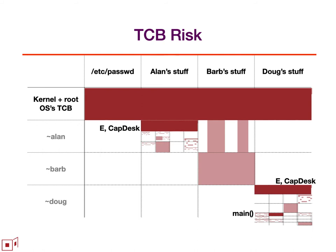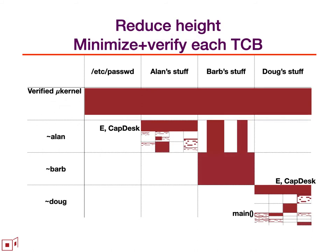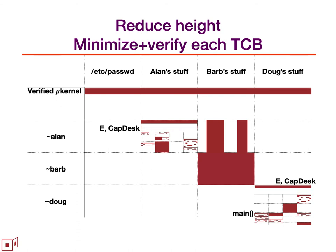However, we can reduce their height. We can reduce the likelihood for each one that it has an exploitable vulnerability by minimizing the total mechanism and by applying formal methods — ideally verification. Even with verification, the risk does not go to zero, but it is substantially diminished.